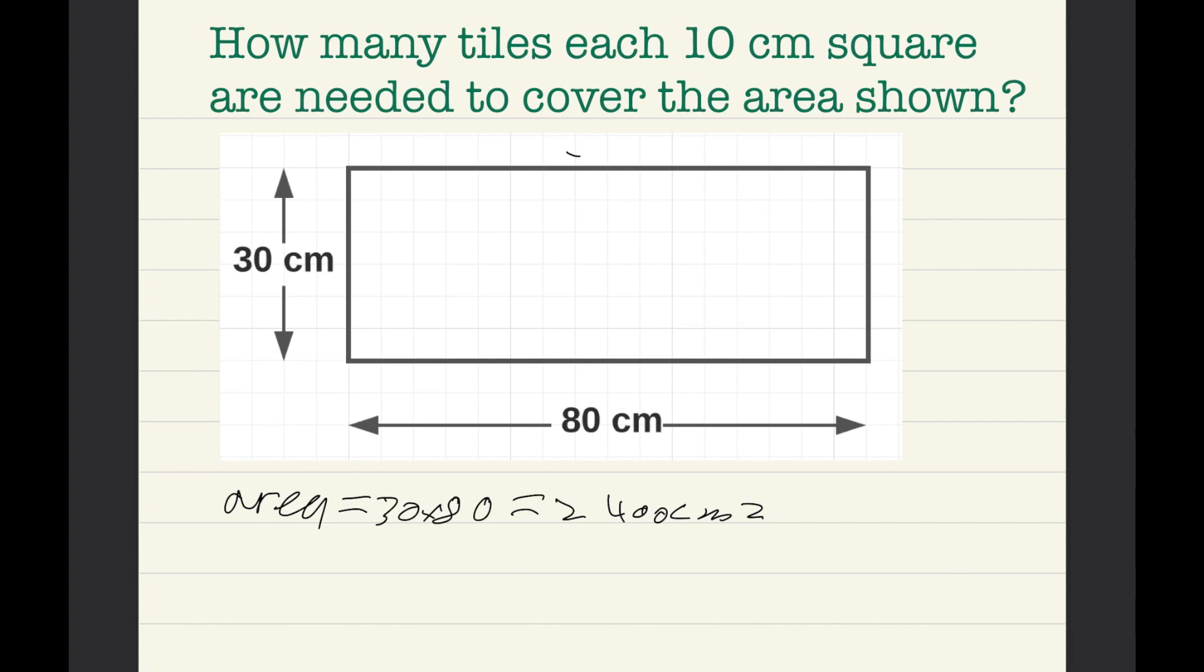So now we need to do 2400cm squared divided by 10cm squared because we need to split this number up to these tiles which equal 10cm squared.